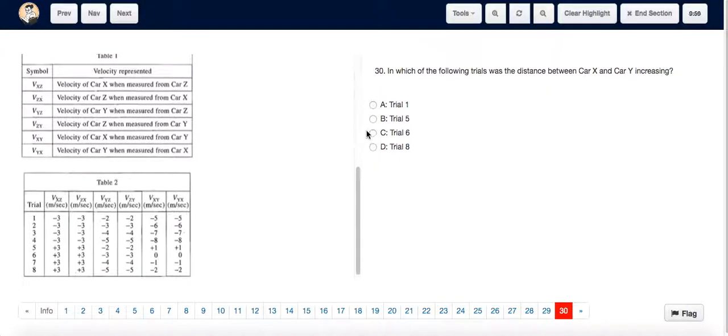So that means trial 5 is the trial during which the distance between car X and car Y was increasing.